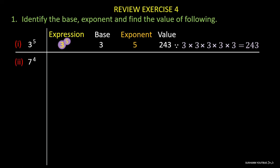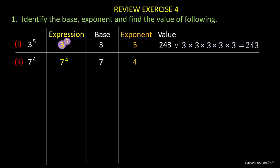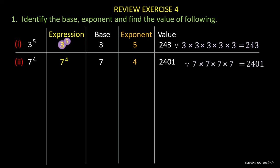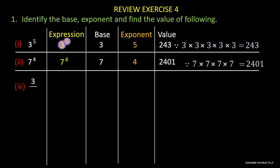Problem number 2: In this expression, 7 is the base and 4 is the exponent. The value is 2401, because when you multiply 7 four times you get 2401. Now similarly, try to solve all other problems by yourself.